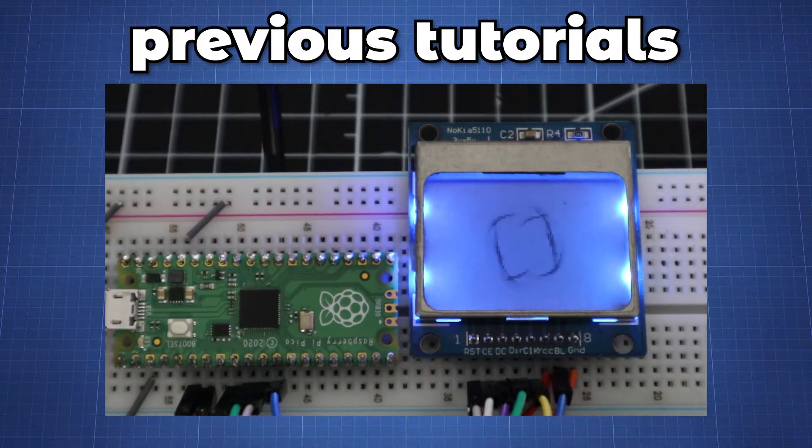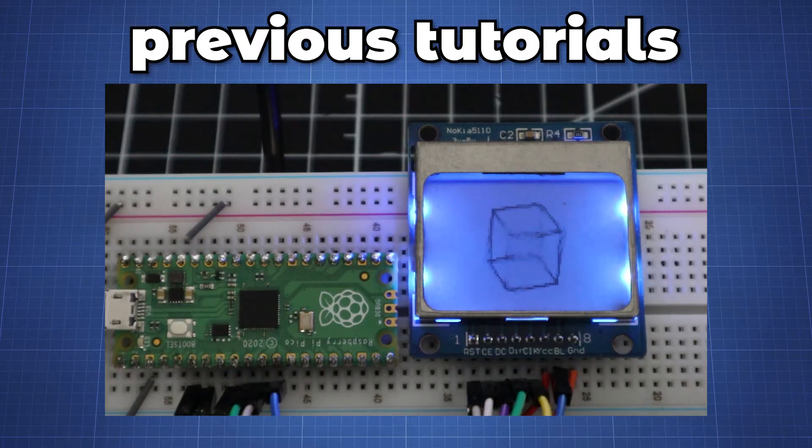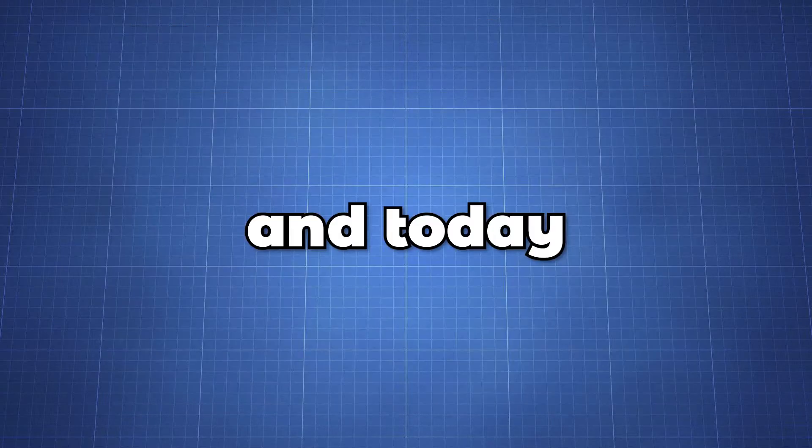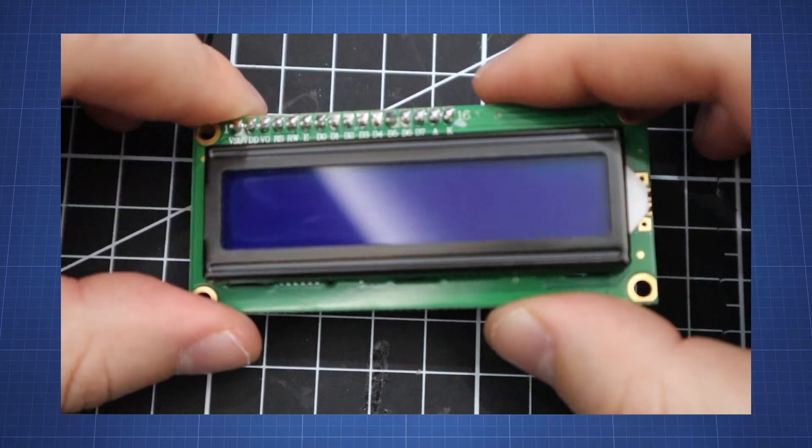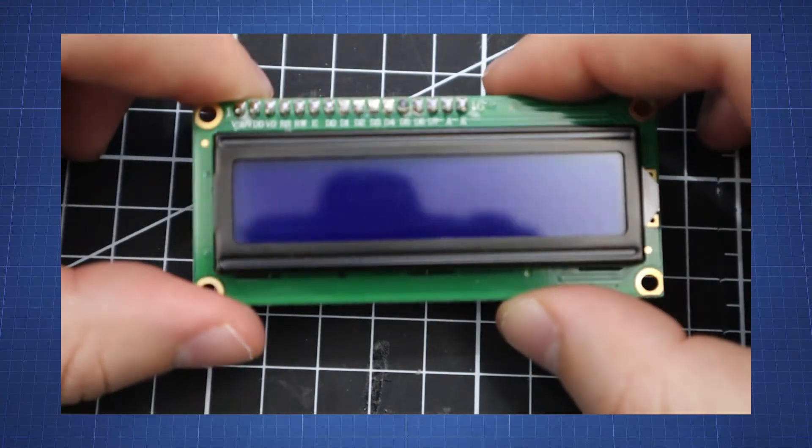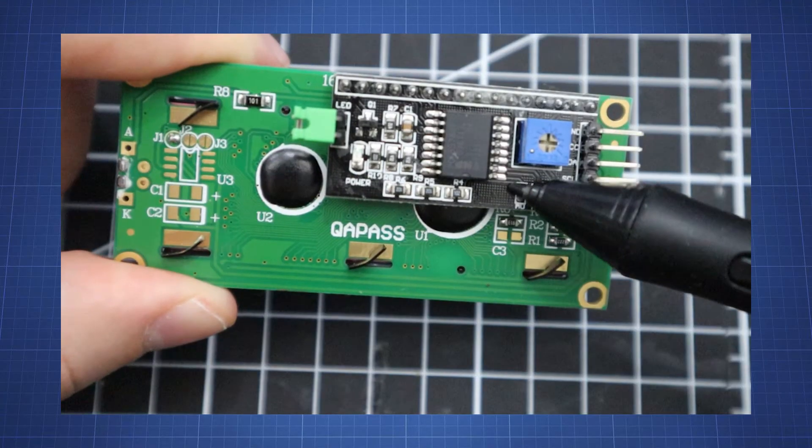Hello everyone and welcome to my nerd cave. In today's video we are going to look at how to connect an LCD to the Raspberry Pi Pico. We have looked at how to connect and use the Nokia 5110 LCD in a previous video and today we will connect one of the most common LCDs, the 16 by 2 character LCD with I2C adapter.